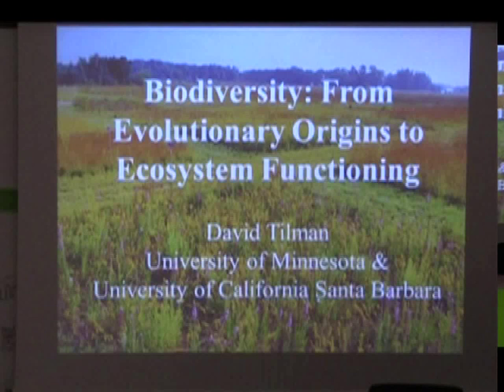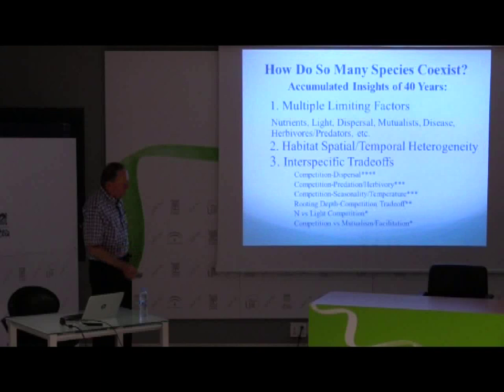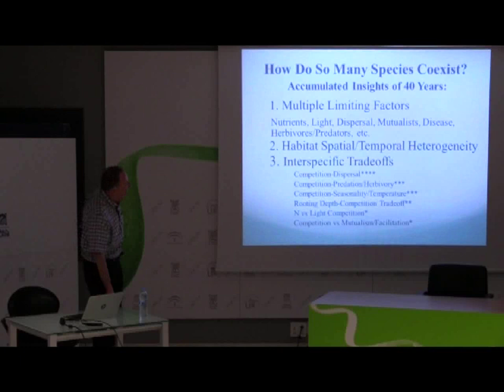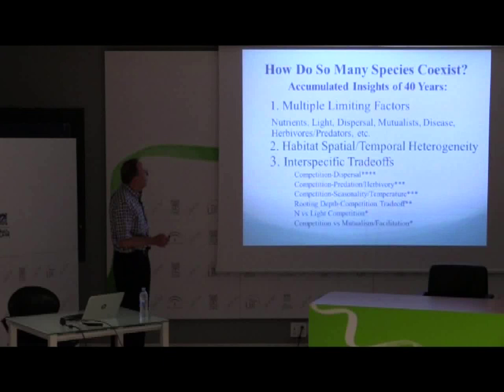Thank you, it's a pleasure to be here. Maybe 10 million different species living on Earth. And the first question that really intrigued me was trying to understand how so many interacting species could coexist with each other, how they could all persist. And I spent a lot of my life pursuing this question, and so have many other people.